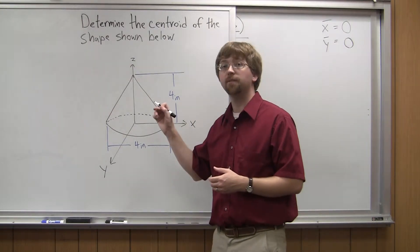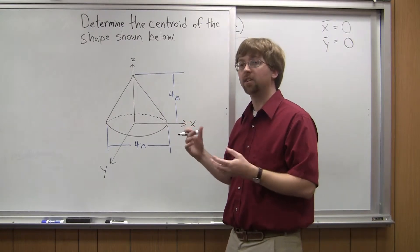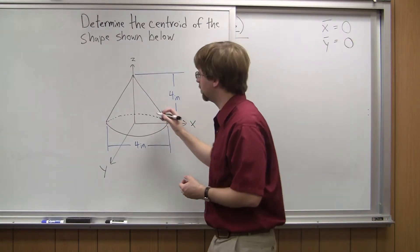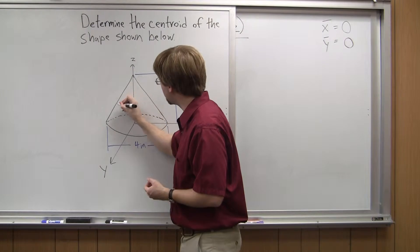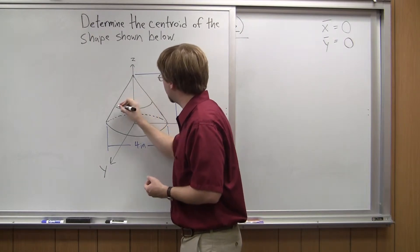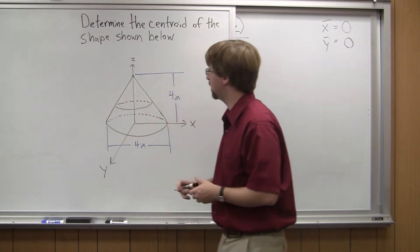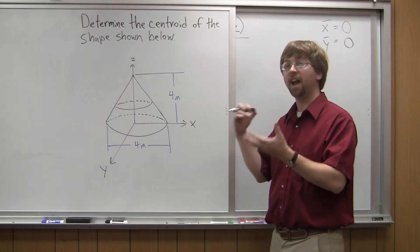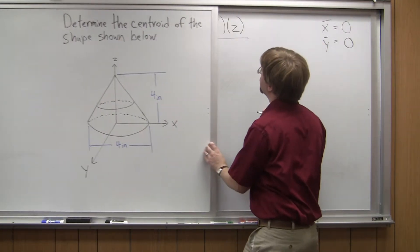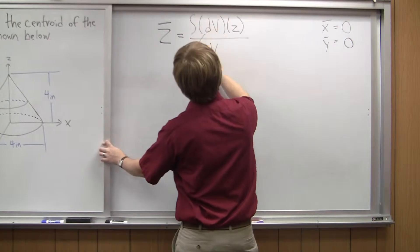So at a specific value of z, the area at that specific value of z is just going to be a circle. So if I go up part way, I can imagine I've got this circle here. That's my cross-section. So dv is going to be that area. And the area of a circle...